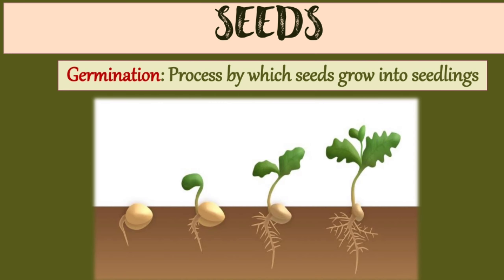The first part is the seed. How does a seed grow into a seedling? There is a process called germination. Germination means the process by which seeds grow into seedlings. As you can see in the picture, from a single seed, this is how the seedling is growing. This process is called germination.